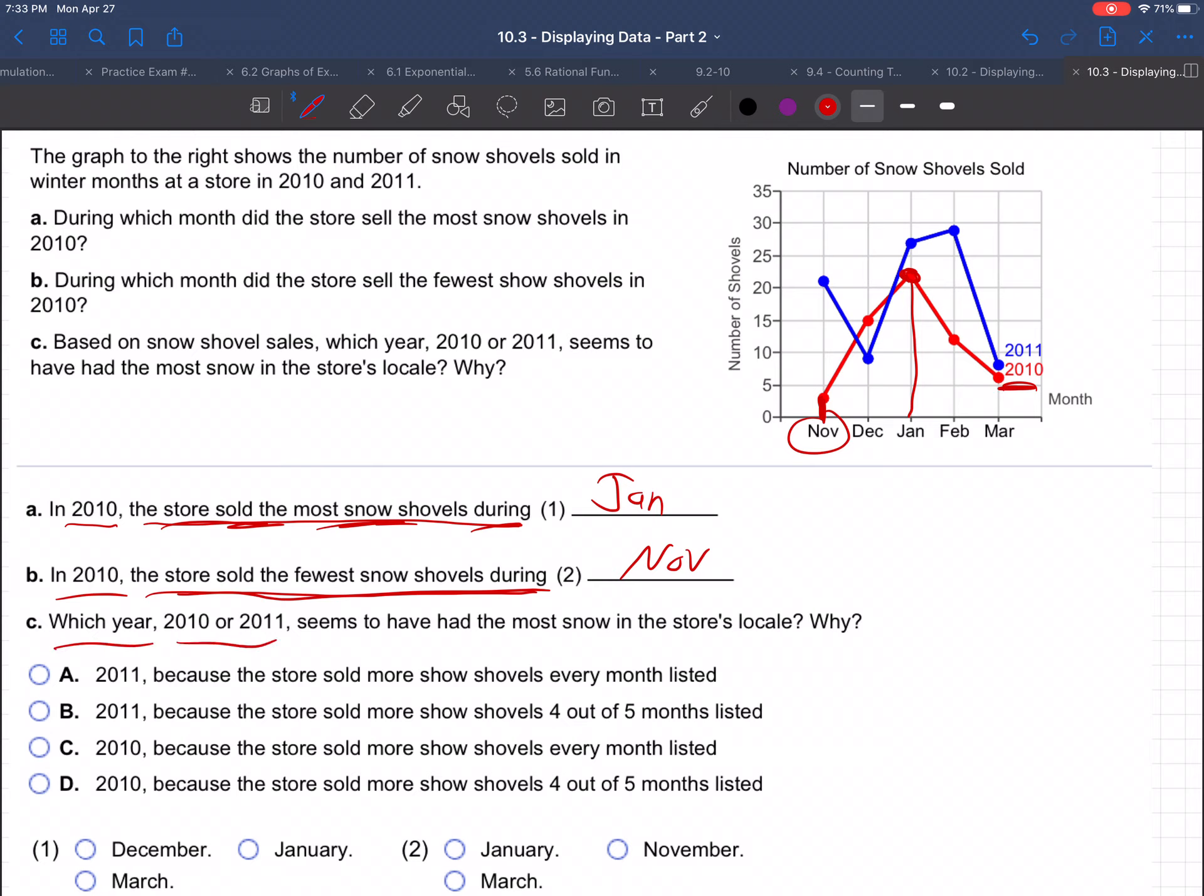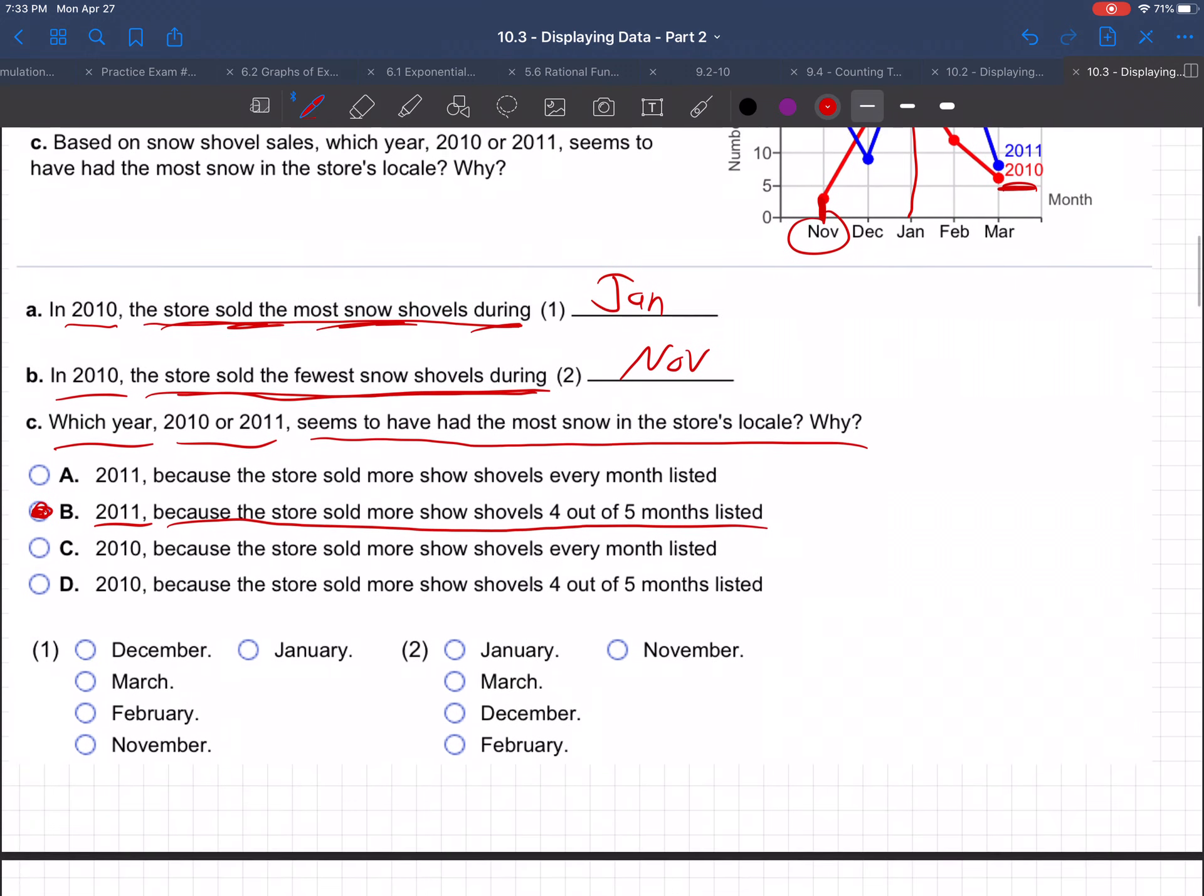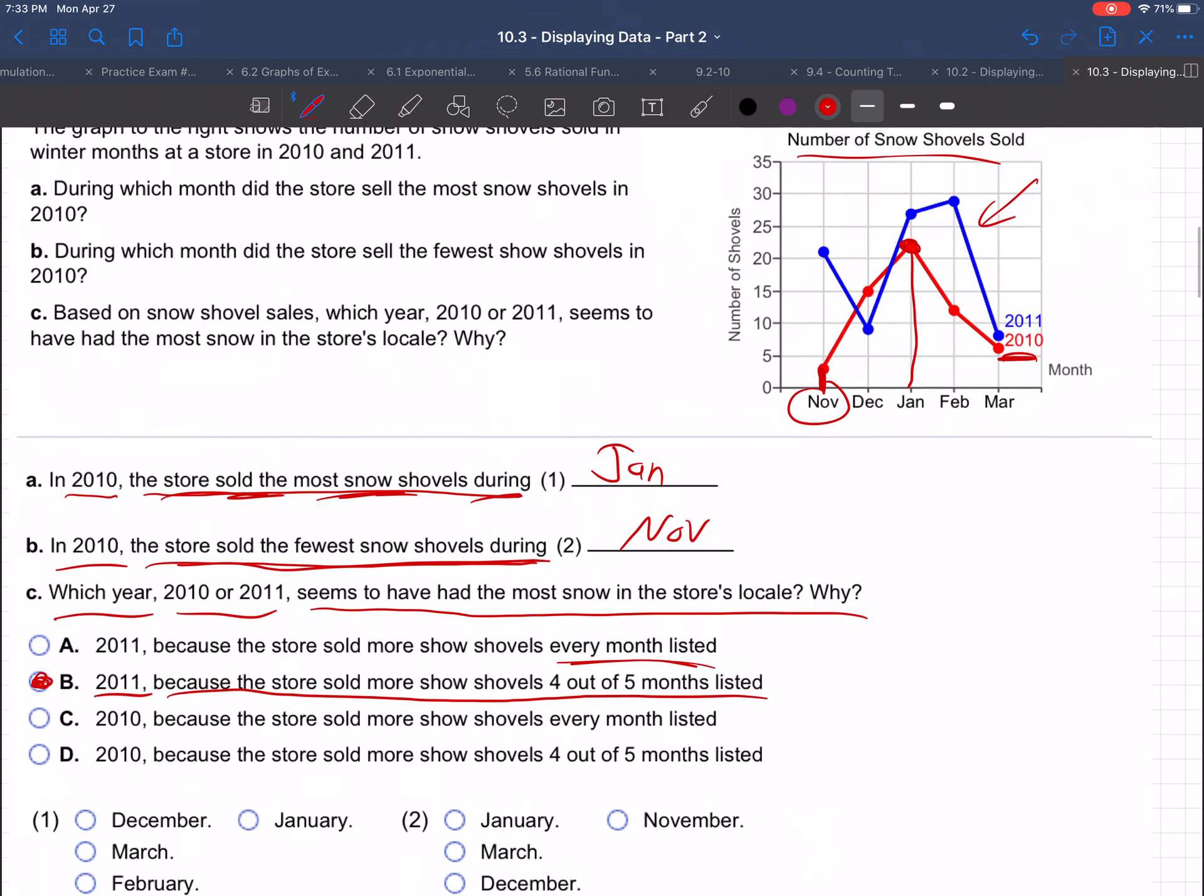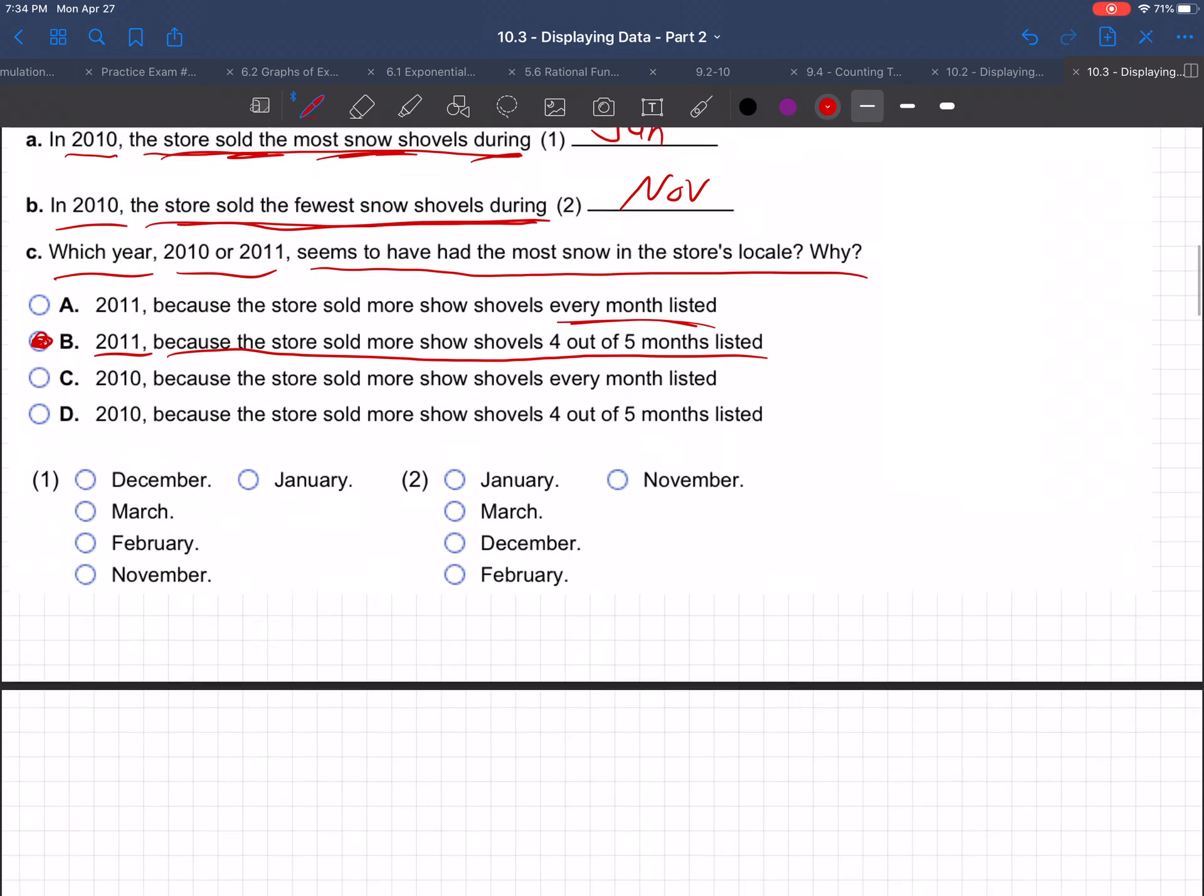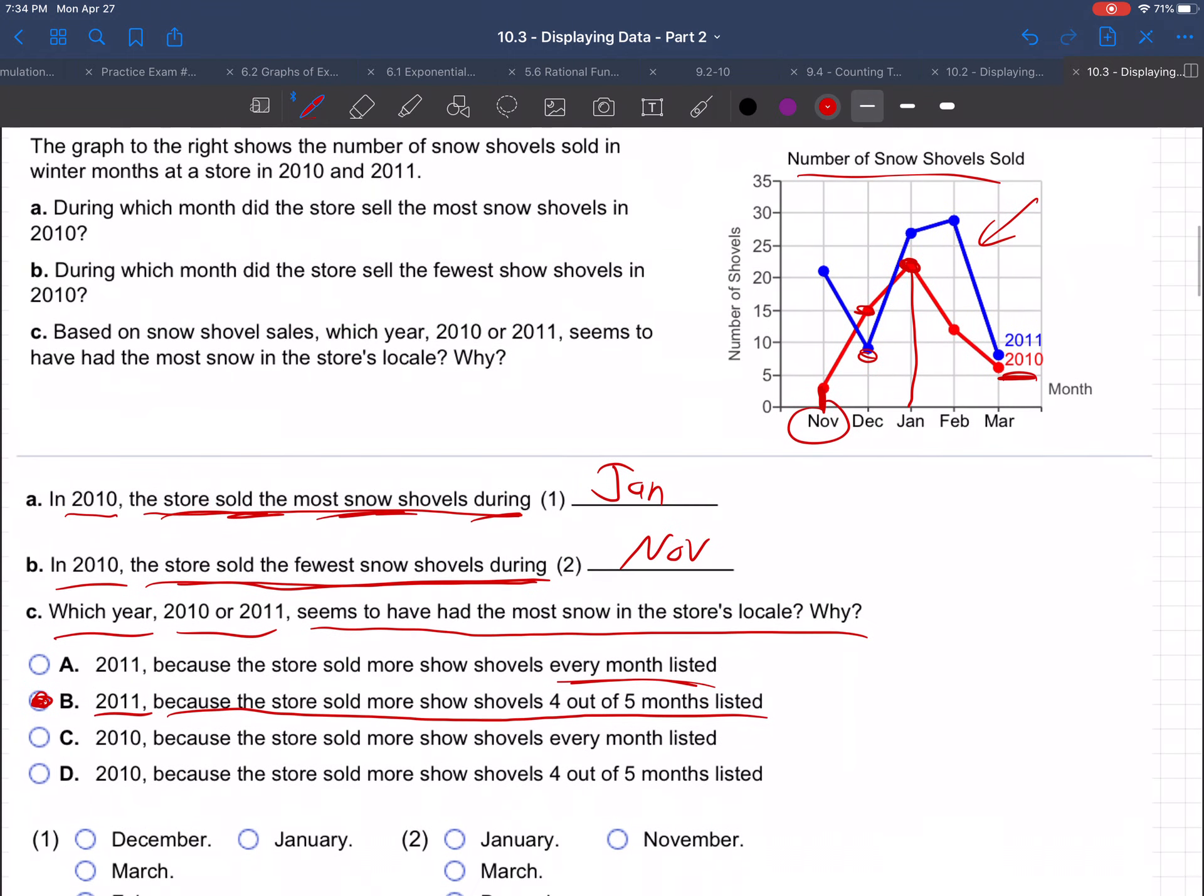Next, in which year, 2010 or 2011, seems to have had the most snow in the store's locale? Why? Well, it seems like B here. It seems like 2011, because the store sold more snow shovels four out of five months listed. Right? 2011, the blue graph is higher than the red graph. So the number of snow shovels sold was higher in 2011. We can't say it's A, because A said every month. Not quite every month. Right here, the blue is below the red in December. So other than that, the other four out of five months, it's true.